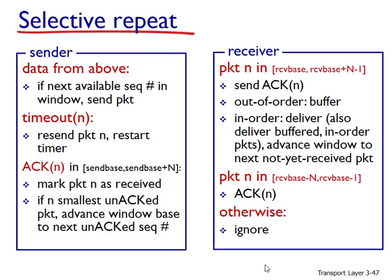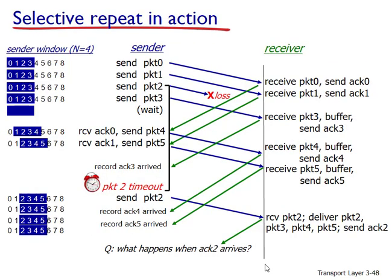The receive window is then moved forward by the number of packets delivered to the upper layer. As an example, when a packet with sequence number equal to the base — say 2 — is received, it and previously received and buffered packets 3, 4, and 5 can be delivered to the upper layer. If a packet with sequence number 1 is correctly received, an acknowledgment must be generated even though the receiver has previously acknowledged it. Otherwise, ignore the packet. If the receiver were not to acknowledge this packet, the sender's window would never move forward.